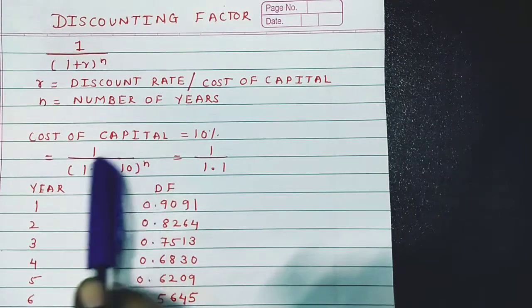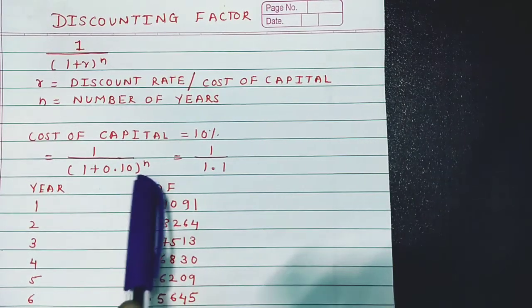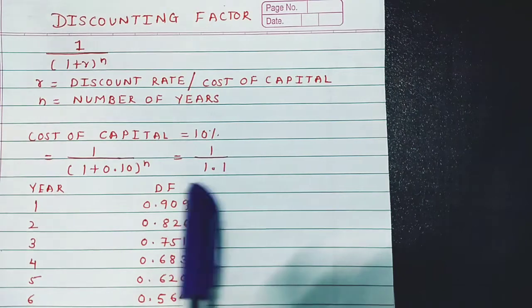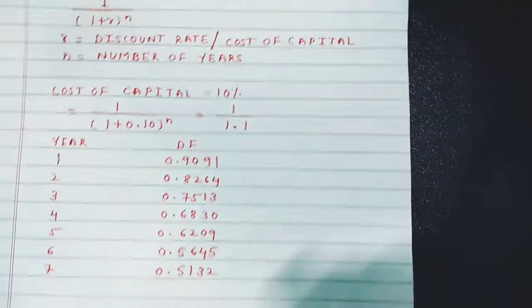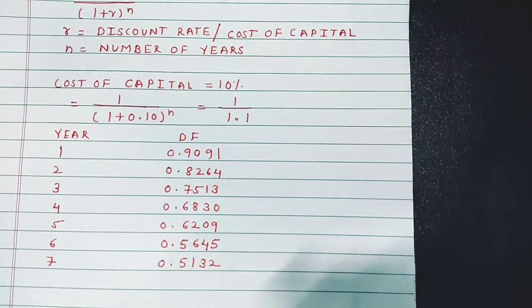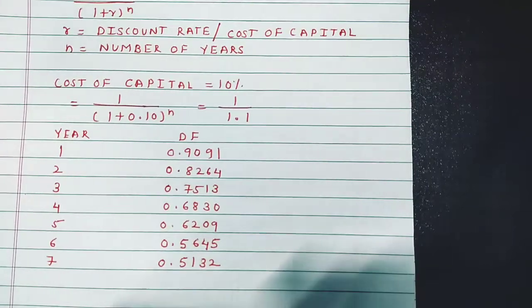So the formula becomes 1 divided by 1.1. Now, how to compute this discounting factor with the help of a simple calculator? It's very easy.